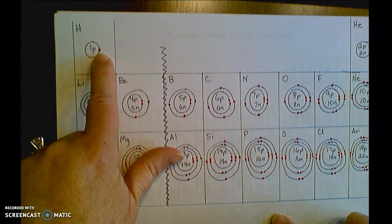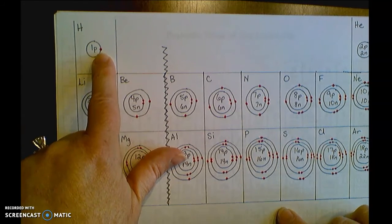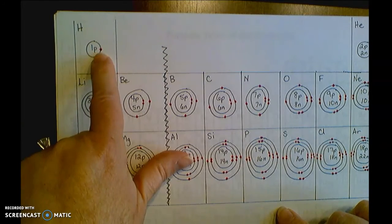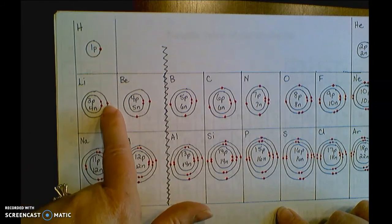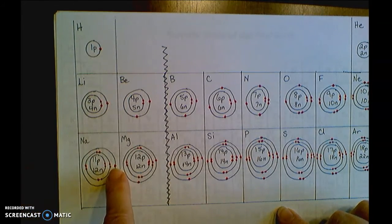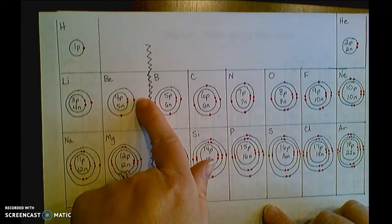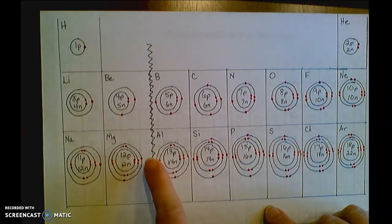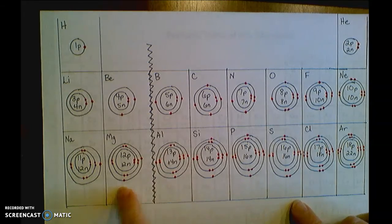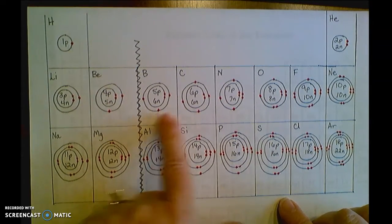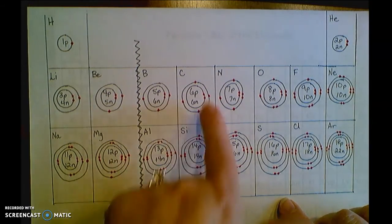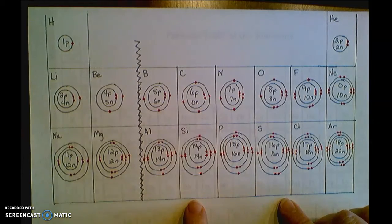And so if you look at that outermost ring on the Bohr model, for the first column, one electron, one electron, one electron. For the second column, the outermost ring, two electrons there, two electrons there. For the third column, three electrons. For the fourth column, four electrons, and so on.